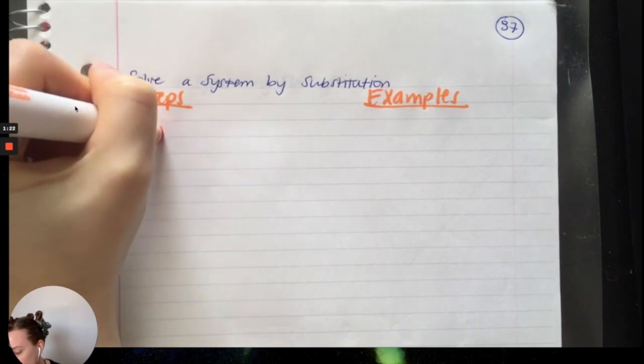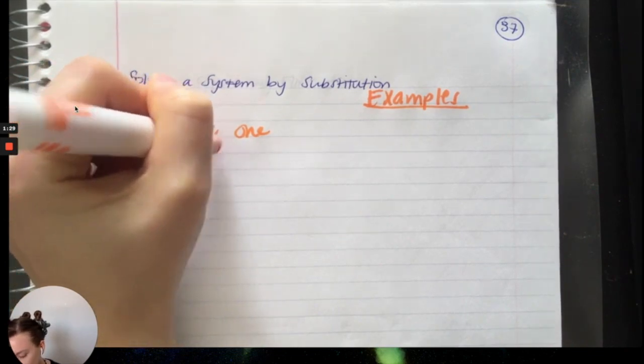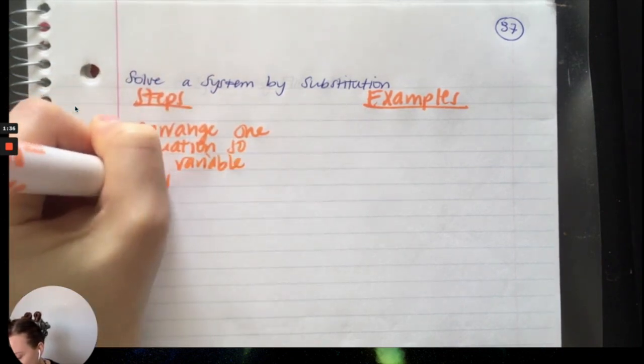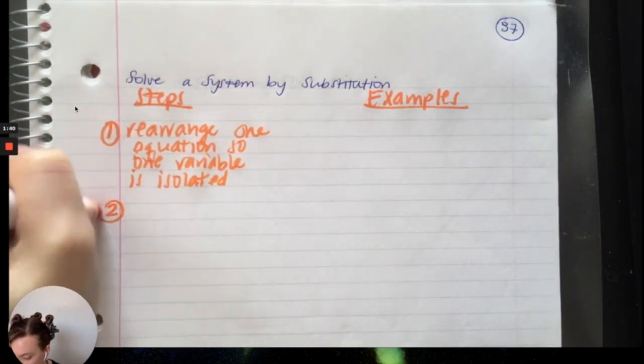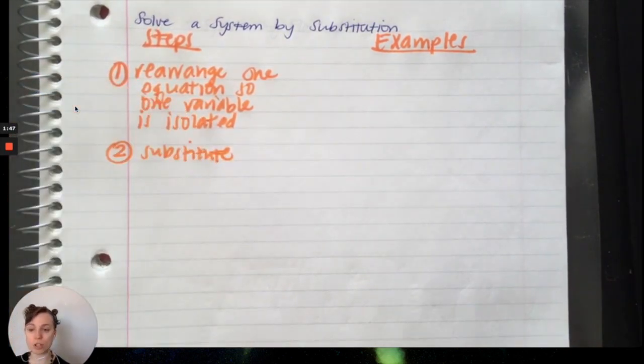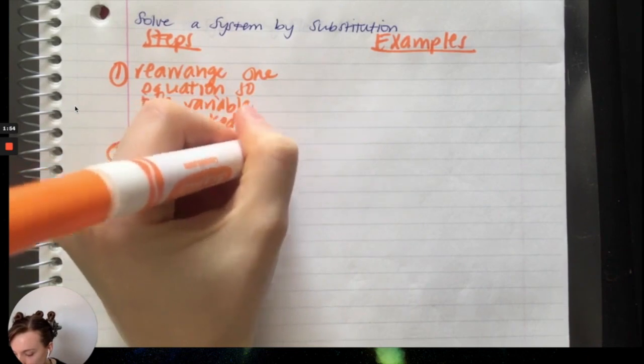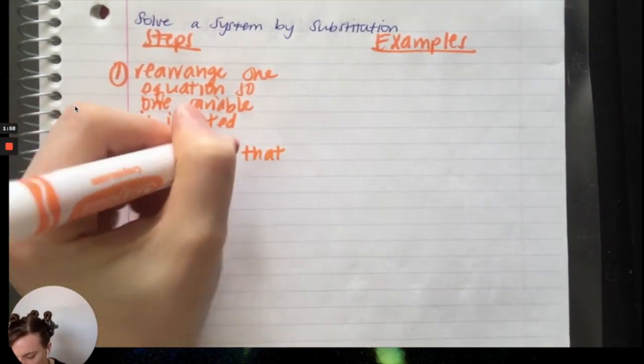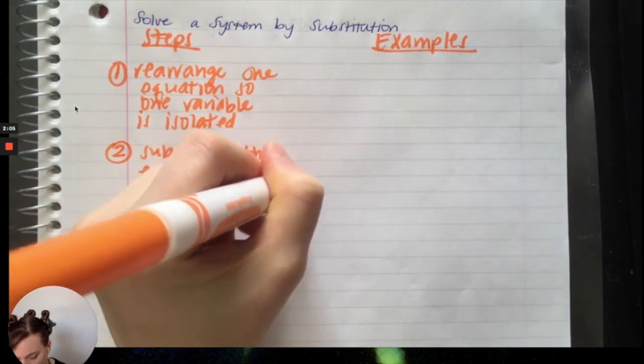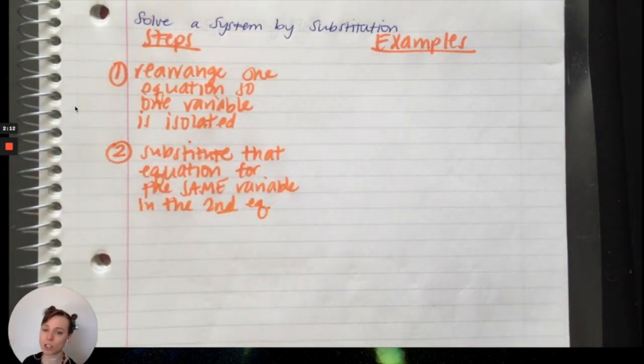We're going to have steps on the left hand side and examples on the right hand side. I'm going to write all the steps first and then we will go through all of our three examples. So steps: we're going to rearrange one equation so one variable is isolated or by itself. Second step is to substitute that equation for the same variable in the second equation.